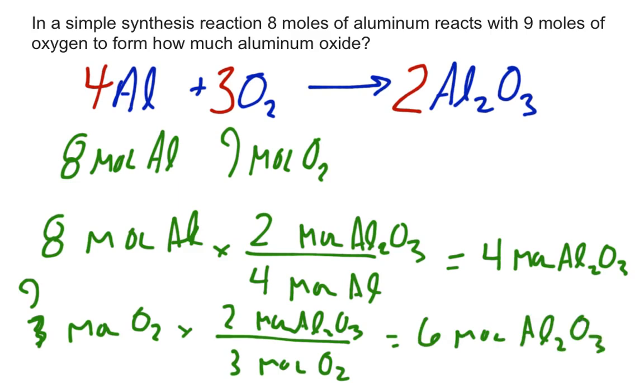So based on this right here, which one of our amounts of substances can give us less product? Hopefully you came up with four moles of Al2O3 being less than six moles of Al2O3. Well, which one of our reactants got us that?